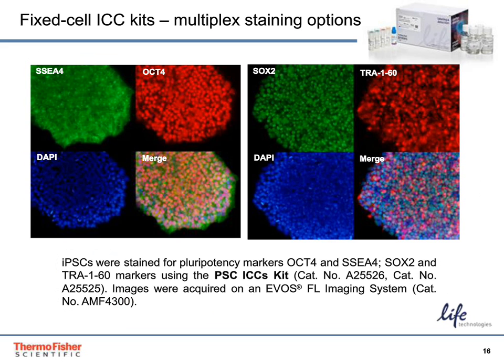This next slide shows the use of fixed cell ICC kit with the multiplex option. Induced pluripotent stem cells were stained for pluripotency markers. Images were acquired using the EVOS FL scope. In the left panel, you can see surface marker SSEA-4 and intracellular marker OCT-4 staining, along with DAPI, and the merged image of all three markers.